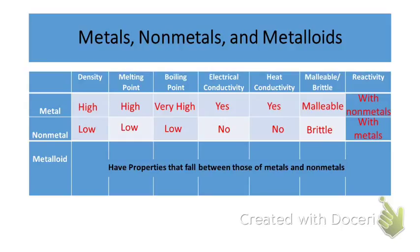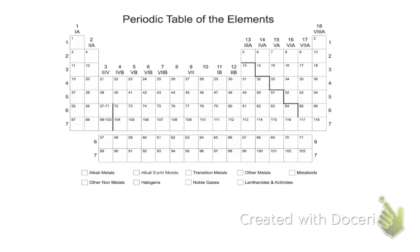Properties of metalloids, well, they have a mixture. It depends on the metalloid, but they're going to have properties that fall in between the metals and the non-metals.